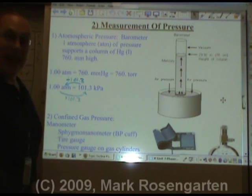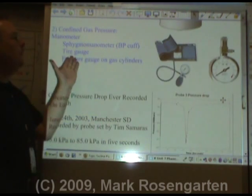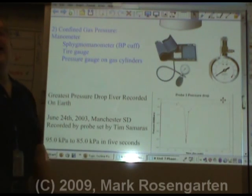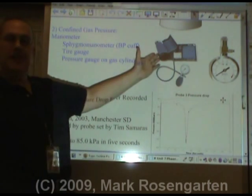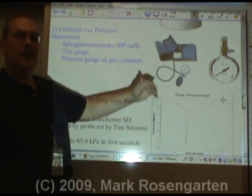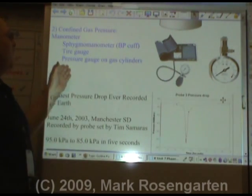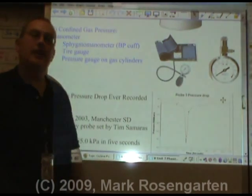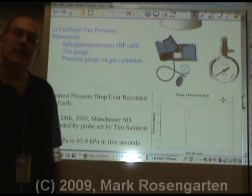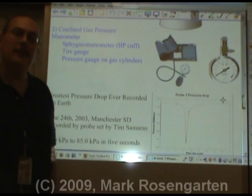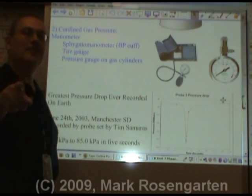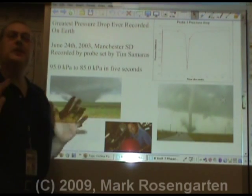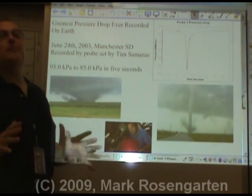If the gas is confined, we use a device called a manometer. A blood pressure cuff is called a sphygmomanometer, and the pressure gauge is what's used on gas cylinders. You can also use one of these devices to find out the tire pressure inside your bicycle or automotive tire.